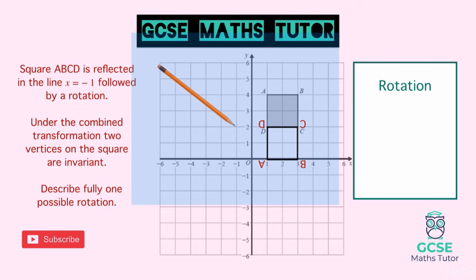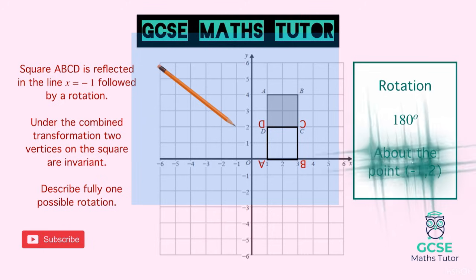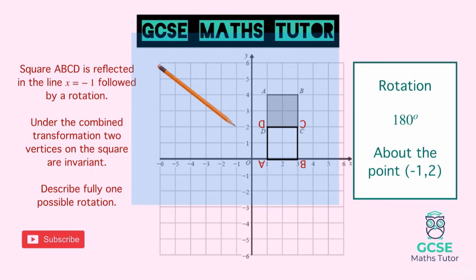Describing this transformation: it is a rotation, by 180 degrees, about the point (−1, 2). That's our full description. Note there are other solutions too — for example, placing the pencil at (−1, 4) would align vertices A and B into the same position instead.